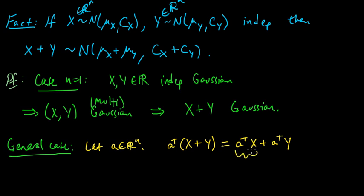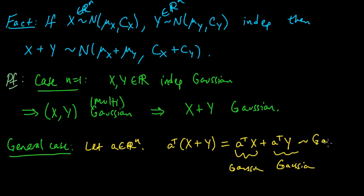Since X is multivariate Gaussian by assumption, a-transpose X is Gaussian, and similarly a-transpose Y is Gaussian — both are univariate Gaussians. From the n equals 1 case, we know the sum of independent univariate Gaussians is Gaussian. We just need to verify independence: since X and Y are independent, any function of them is also independent. Therefore these are independent univariate Gaussians, so their sum is a univariate Gaussian, which is what we needed to show in order to verify that X plus Y is multivariate Gaussian.